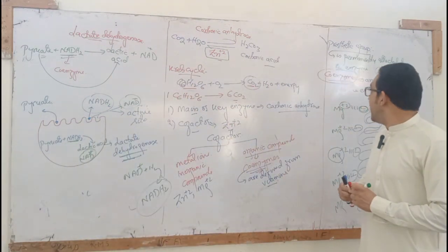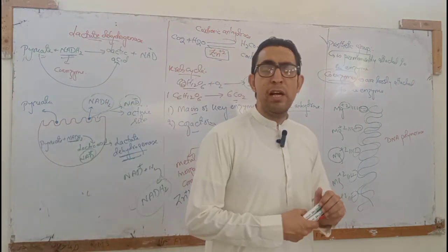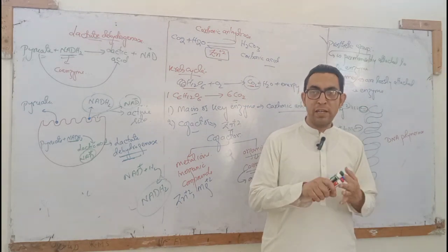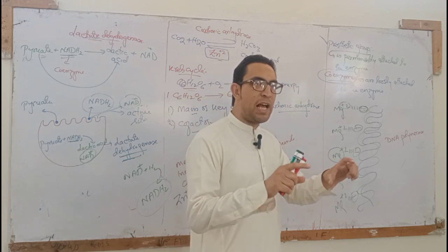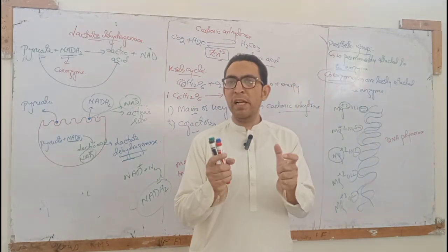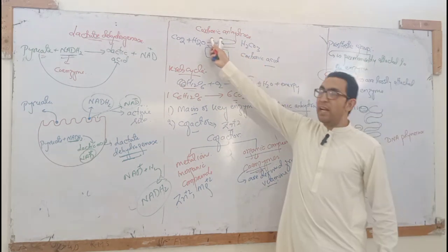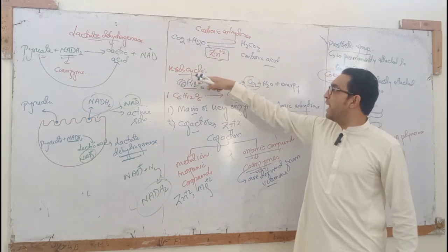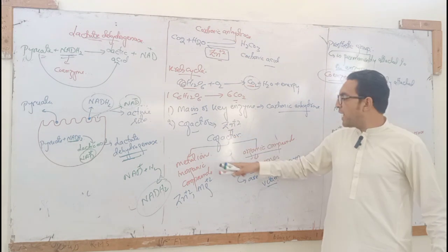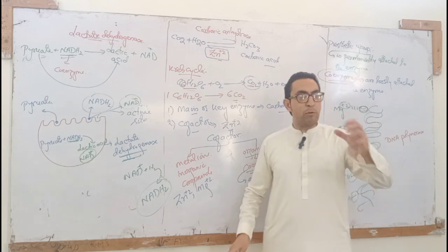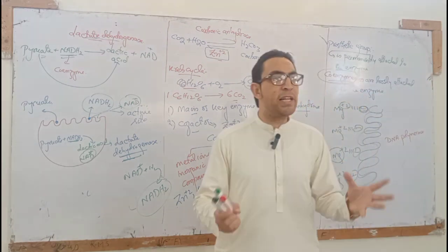So let us summarize the chemical nature of enzymes. Most enzymes — 95% — are protein in nature. 5% are ribozymes. The protein part of the enzyme is called the apoenzyme, and the non-protein part is the cofactor. Together they form the holoenzyme — the complete and functional enzyme. Cofactors include metal ions and organic compounds such as coenzymes and prosthetic groups. Coenzymes are derived from vitamins.